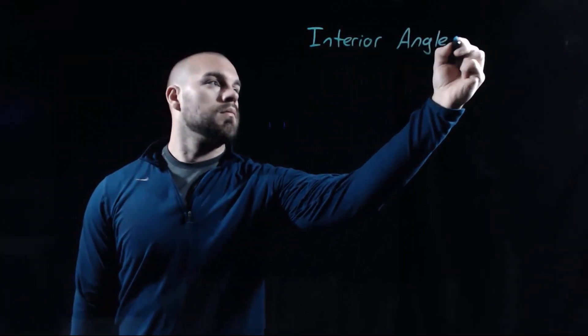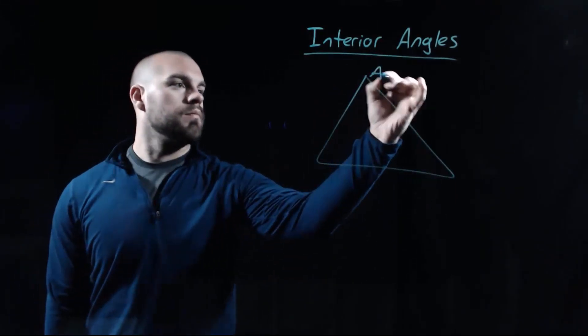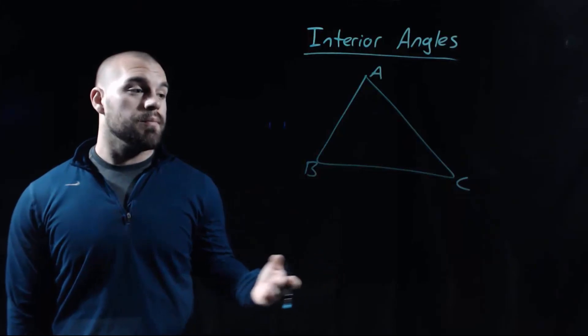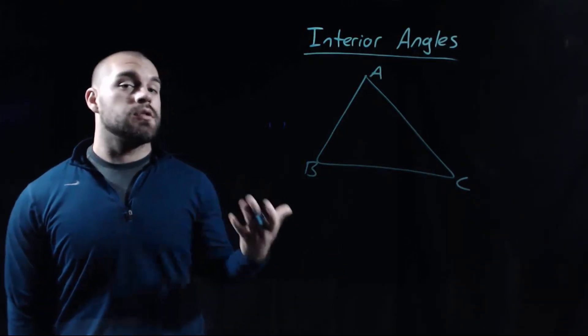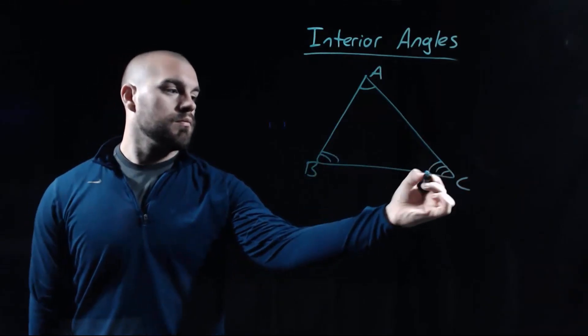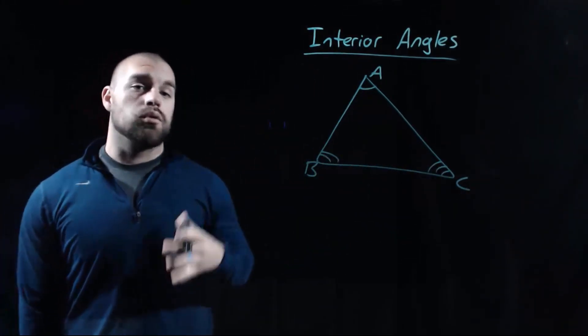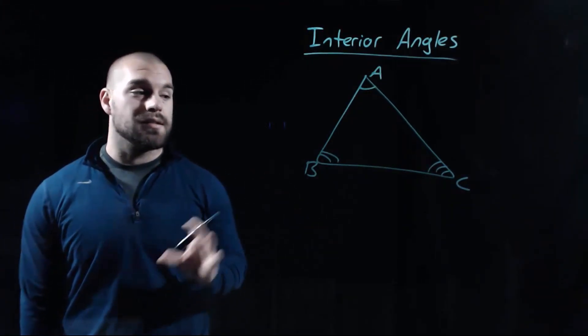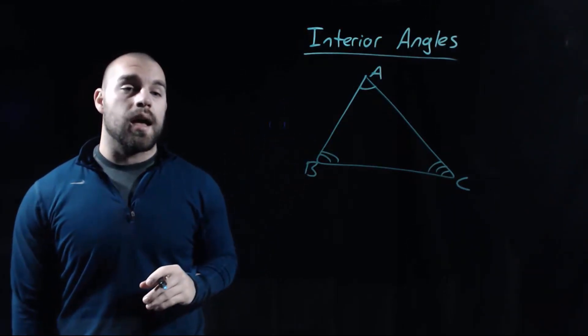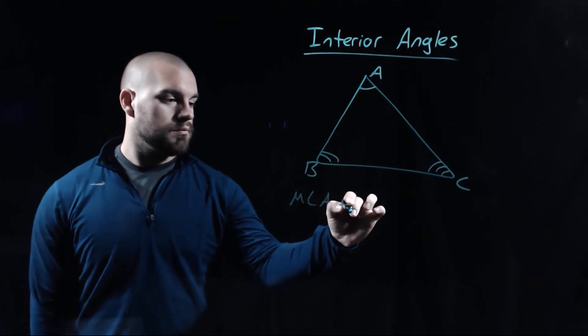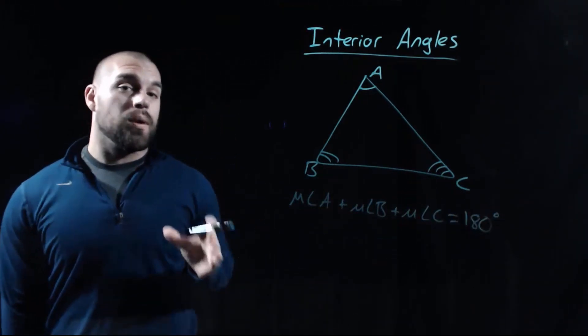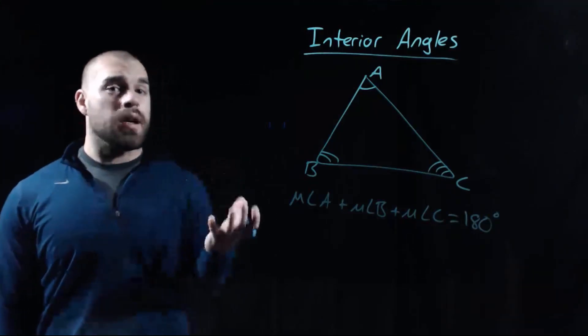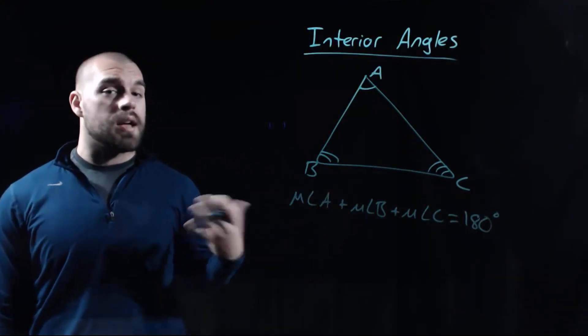Let's talk more about the angles inside a triangle, called interior angles. For a general triangle with angles A, B, and C, there is something always true regardless of classification — acute, obtuse, right, scalene, isosceles — when we add those three interior angles together, they always equal 180 degrees. This is called the triangle sum theorem: the three angles added together must equal 180 degrees.